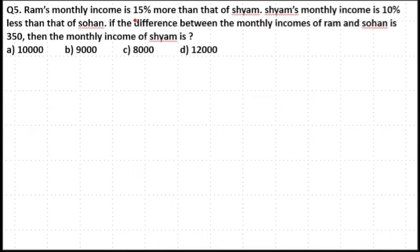Ram's monthly income is 15% more than that of Shyam. Shyam's monthly income is 10% less than that of Sohan. If the difference between the monthly income of Ram and Sohan is 350, then the monthly income of Shyam is?